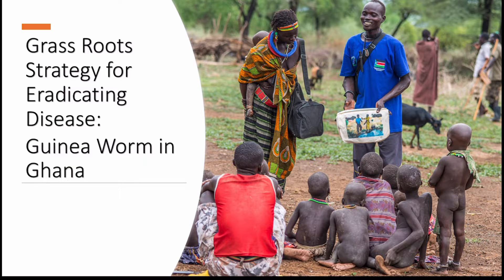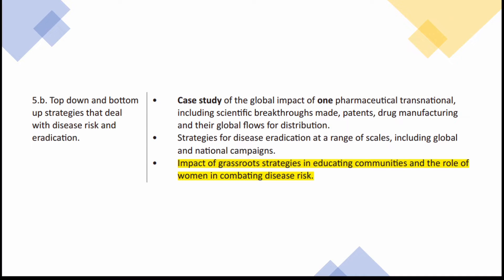In today's video I'm going to look at a grassroots strategy for eradicating disease, with the example being guinea worm in Ghana. This is part of the OCR A-level disease dilemma spec, where we need to know a grassroots strategy, but also looking at the role of women in combating disease.